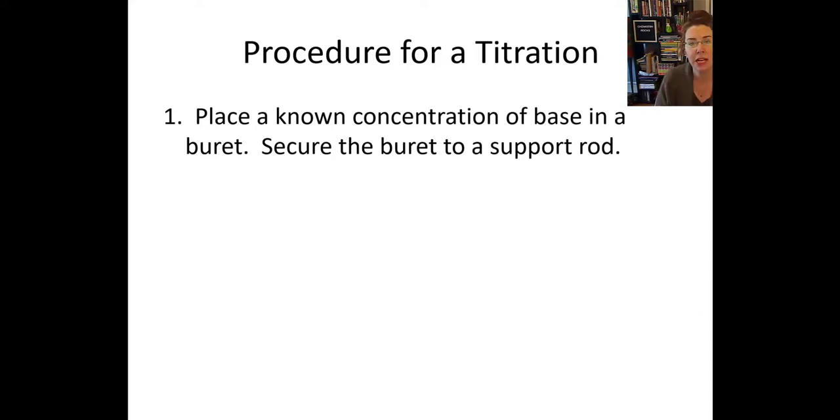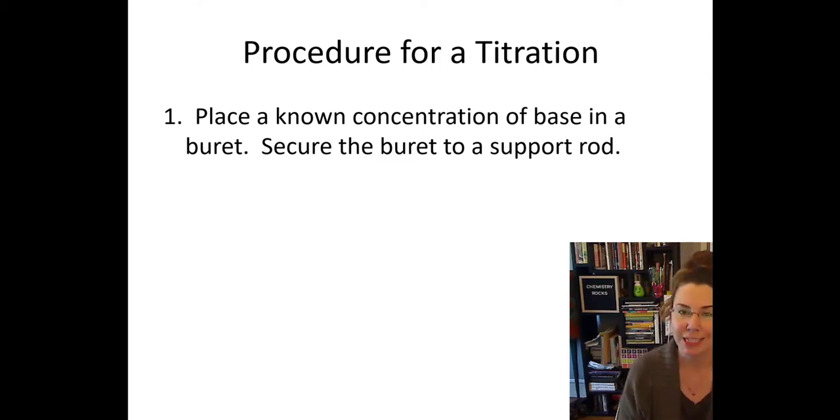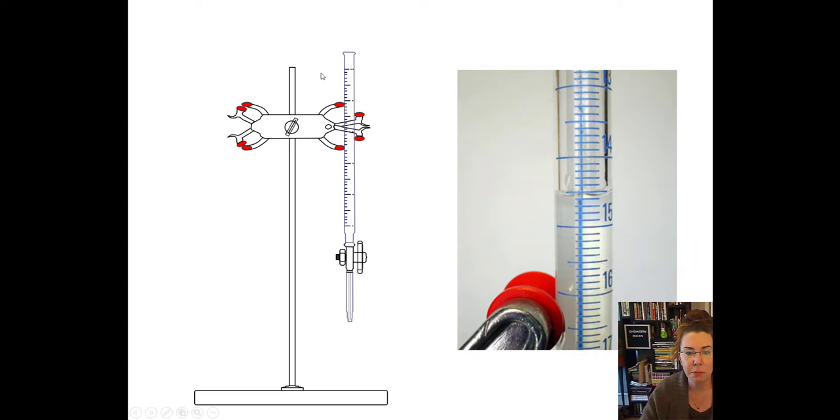So we're going to go through the procedure for a titration. I know we're not going to get to do our titration lab in class. I've actually written you a virtual titration that can get you fairly close to the experience. So the first thing we would do is we would place a known concentration of a base in a burette, and we secure that burette to a support rod. That looks something like this. Here's our support rod with our burette in the support rod. Now, at this point, we have to talk a little bit about how we read a burette because it's a little bit different from, say, a graduated cylinder. If you look here on the right at our example burette, we might notice that the numbers get smaller as you go up because when you fill a burette,